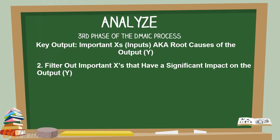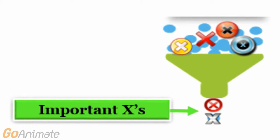2. Filter out important Xs that have a significant impact on the output Y. Use statistical analysis tools to filter out important Xs, those inputs that have a significant impact on the output Y, from unimportant ones.